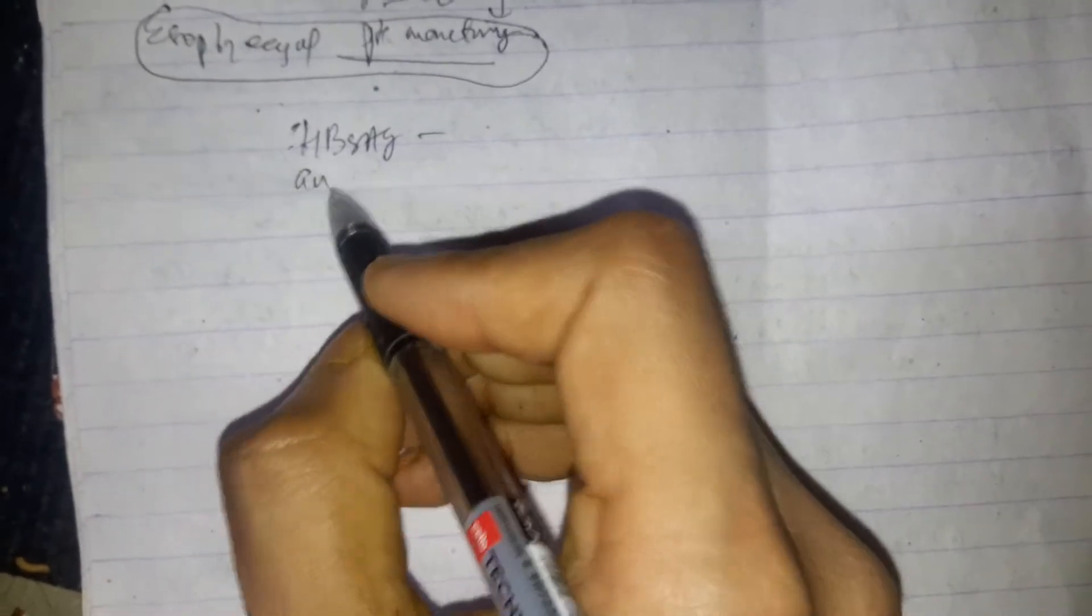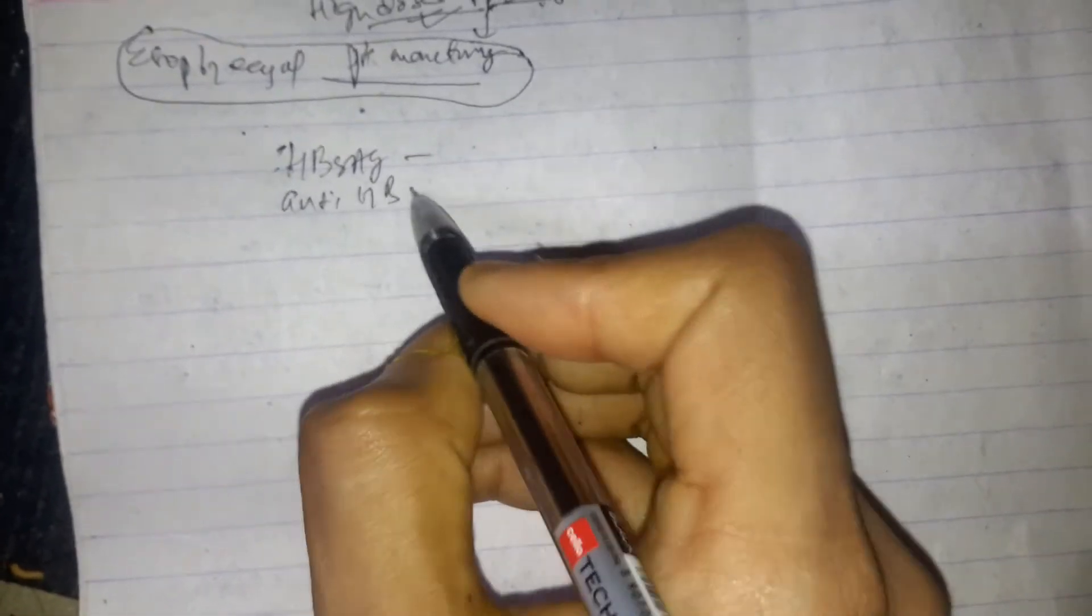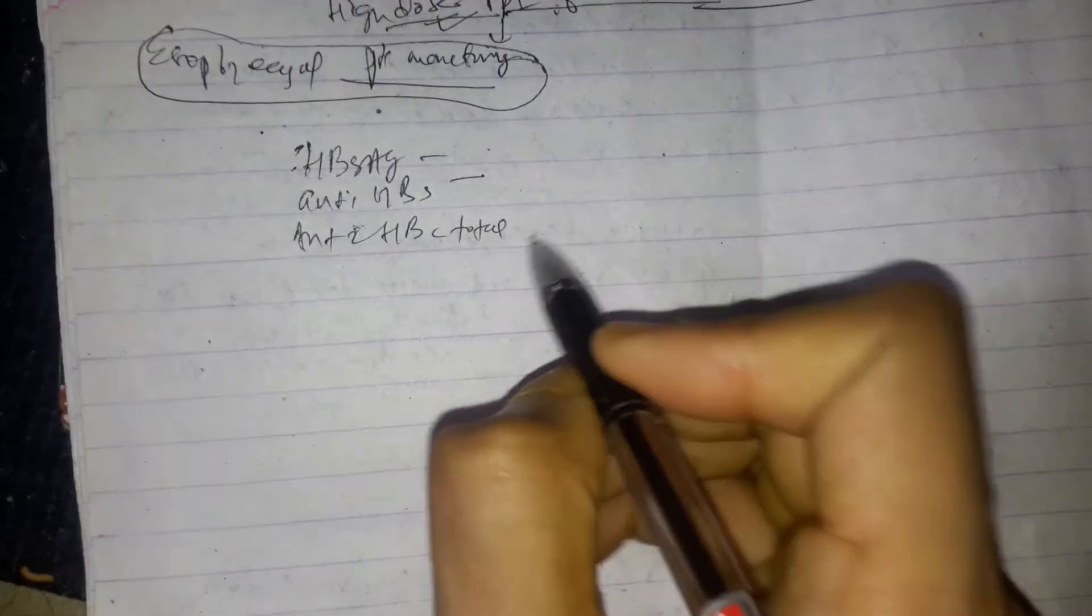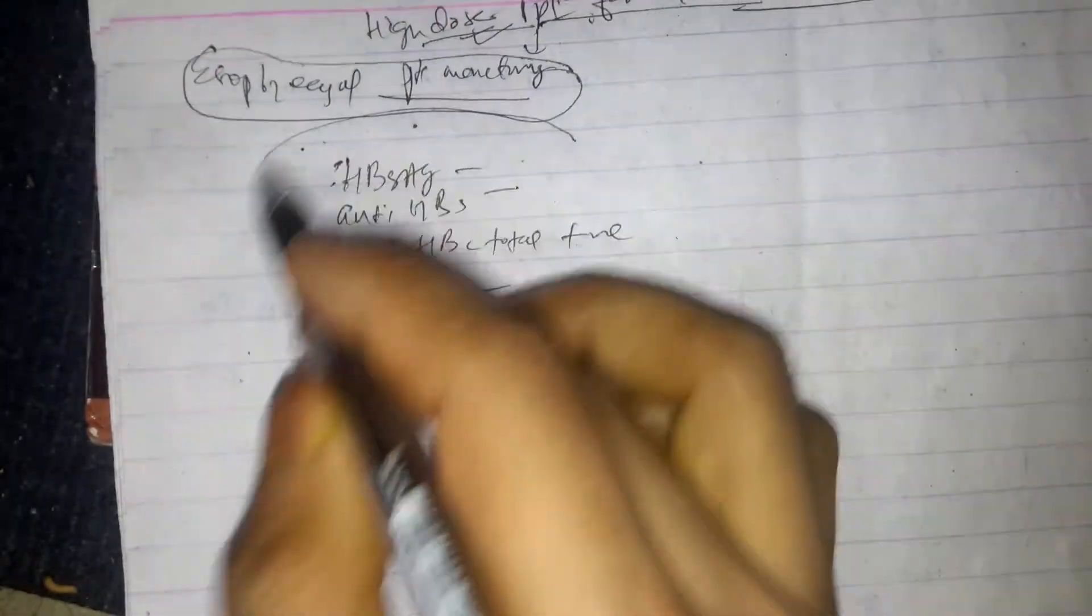HBsAg is negative. Anti-HBs is negative. Anti-HBc total is positive. HBeAg is negative. Anti-HBe is negative.